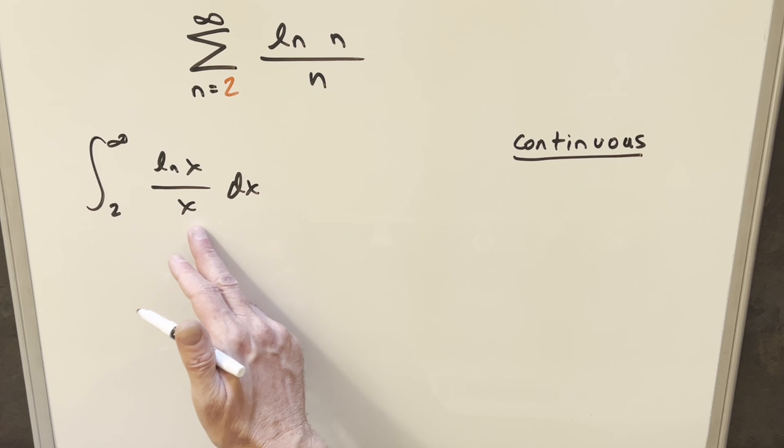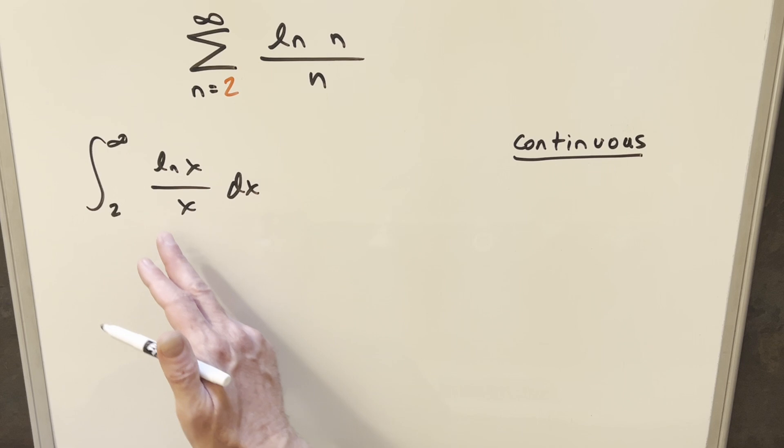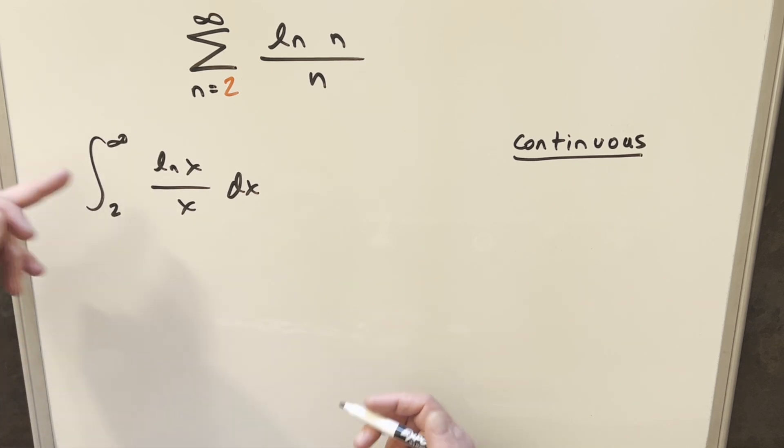Also, it's just kind of where are the problem points? You got a big problem at zero because there's a problem in the numerator and the denominator at zero. But after that, everything's going to be fine, especially going from 2 out to infinity. Continuous, no problem.